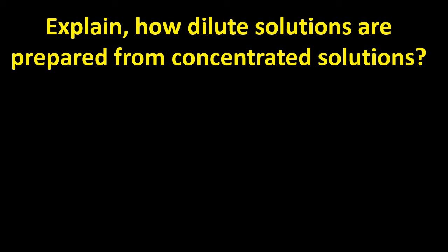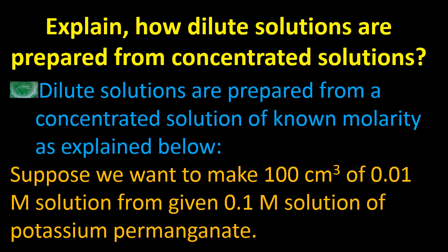Now, how are dilute solutions prepared from concentrated solutions? Dilute solutions are prepared from a concentrated solution of known molarity. If you have a concentrated solution, you must know its molarity, and then you can prepare a more dilute solution. Also remember: when the solution is in liquid form we measure volume in cm³, and in gaseous form we use dm³.